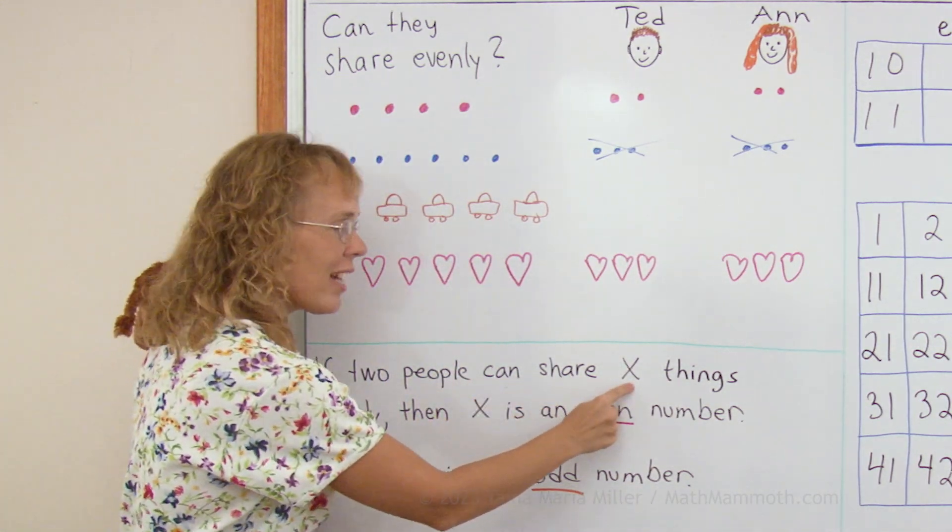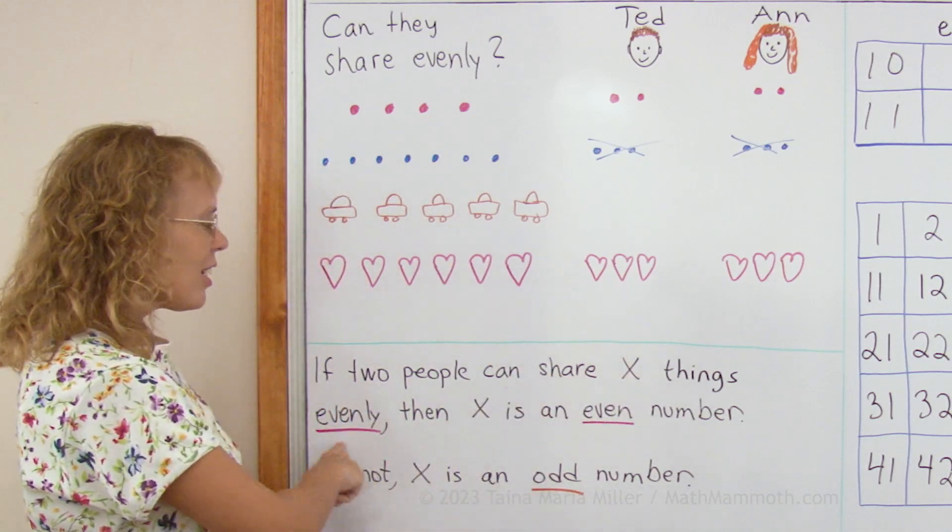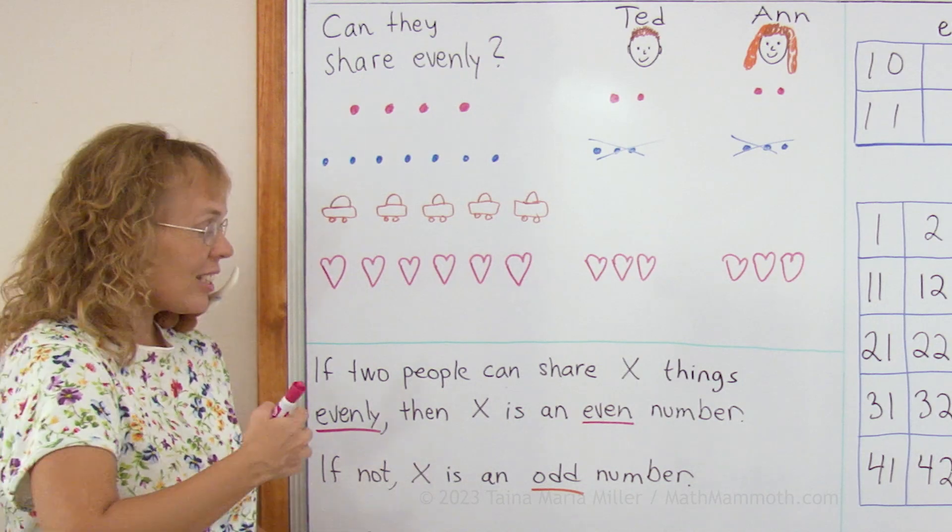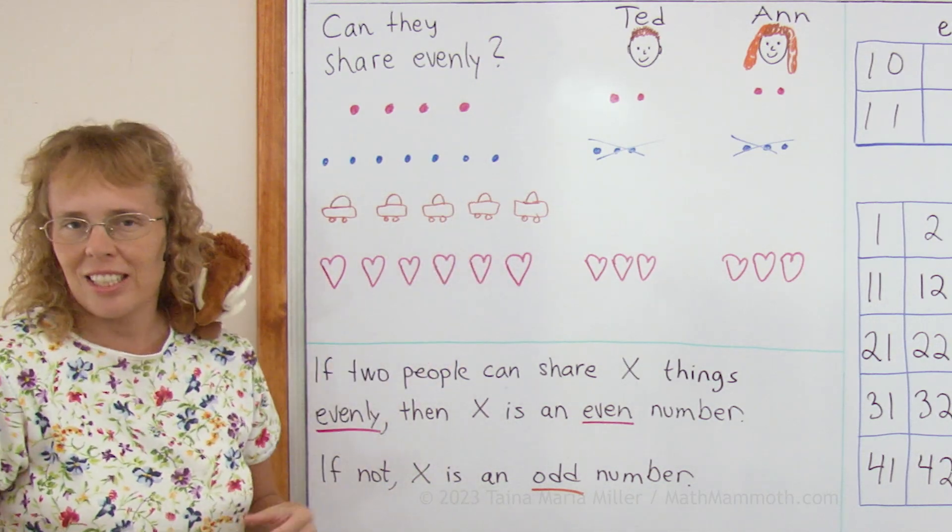If two people can share x things, this is like any number here, x things evenly, then x is an even number. If not, x is an odd number. And let's see over there what else they can share.